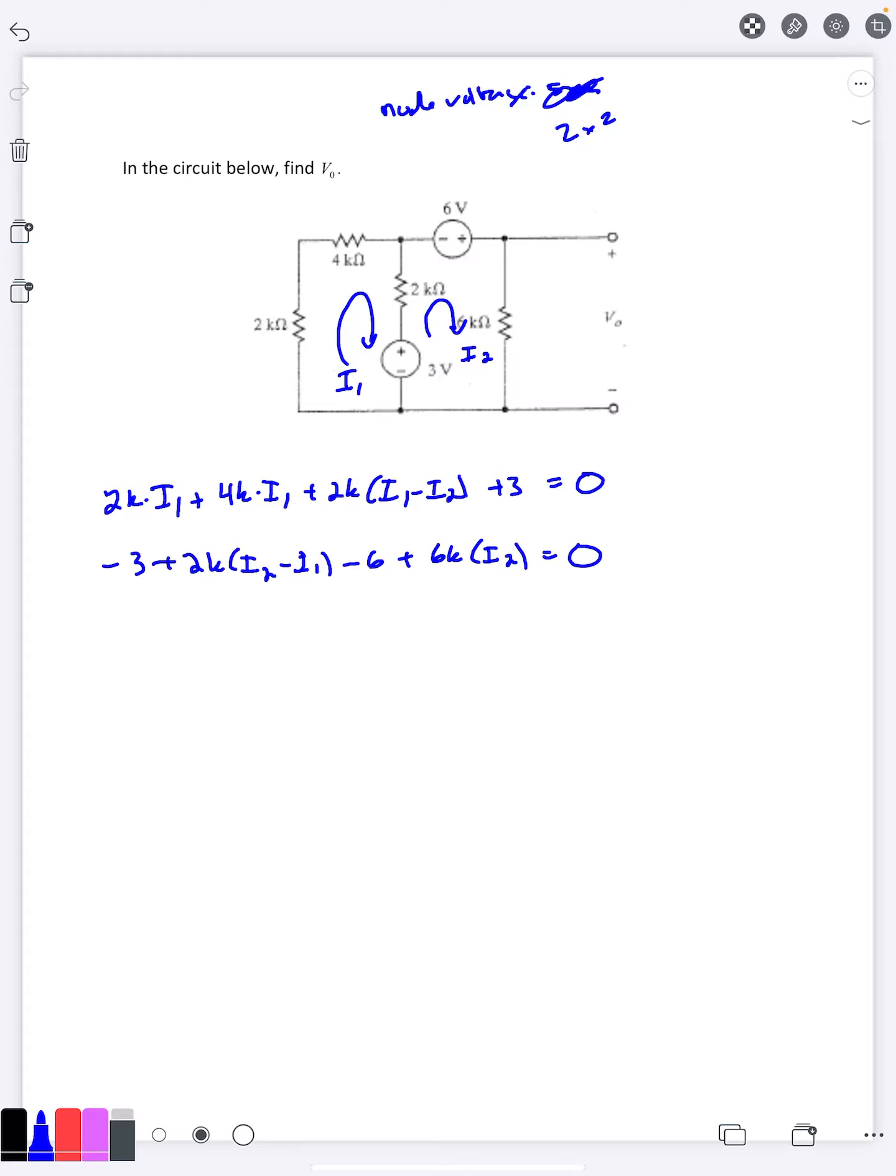And then plus 6k. This one's just going to be i2 equals 0. So I'll go ahead and simplify things, make it look a little nicer here. For the first one, 2k, 6k, it's going to be 8k i1 minus 2k i2 equals negative 3.